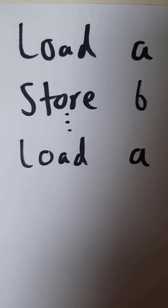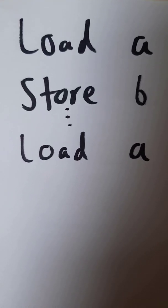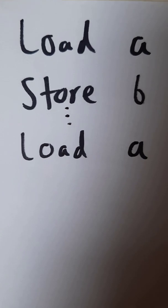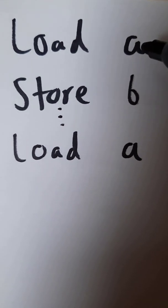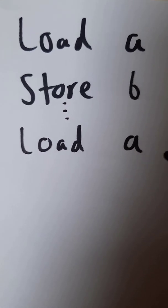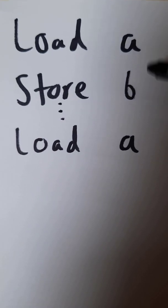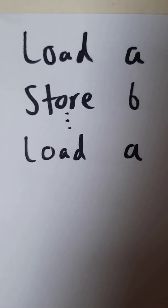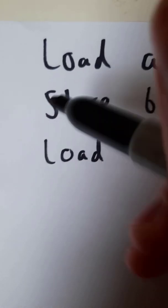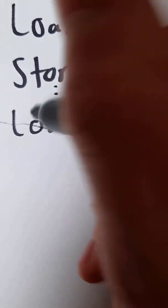One source language dependent optimization is alias analysis. If we load from address A, store into address B, and then later load from A again, if we can prove that A and B do not point to the same location — maybe based on their type — then we can get rid of this load.